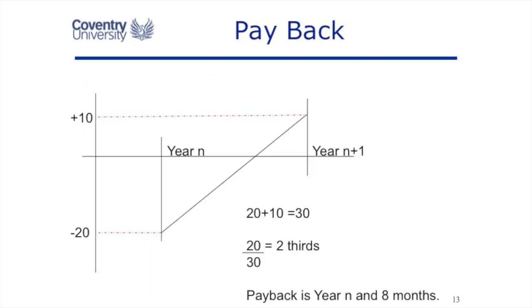It could be that you don't have an exact return to zero, so you may need to do some simple mathematics to calculate when it pays back. In this example, at year n we're at negative £20,000, and at year n+1 we're at positive £10,000, so payback falls somewhere between year n and n+1. This is simple triangular mathematics: to go from negative 20 to positive 10 is a distance of 30, but we only need to travel two-thirds of the way to reach zero — so two-thirds of the year is eight months.